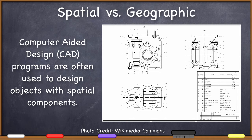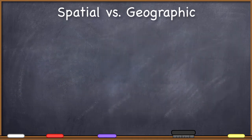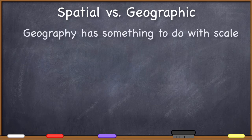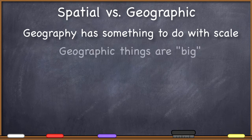In all of these situations, people are concerned with spatial relationships, and computer systems designed to help with any of these tasks must take space into consideration. Even though all of the above are spatial, they are not geographic. Being geographic has something to do with the scale that is being considered. Generally speaking, we can say that geographic things are big. The objects on your desk have spatial relationships with one another, but they do not have geographic relationships.